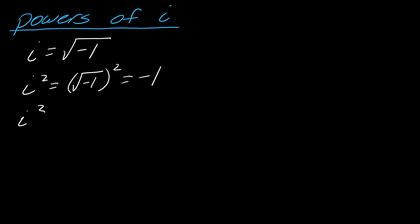So now what would i to the third be? Well, you could think of this as just multiplying this previous power by i again. So this is negative 1. If I multiply this by i one more time, I will ultimately just get negative 1 times i. I'm going to multiply this result by i again. So this just equals negative i.